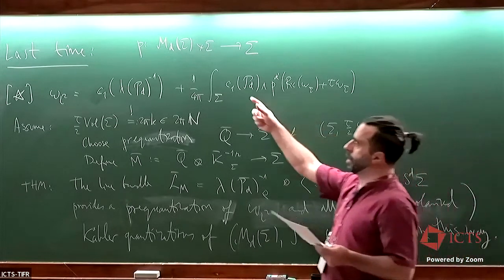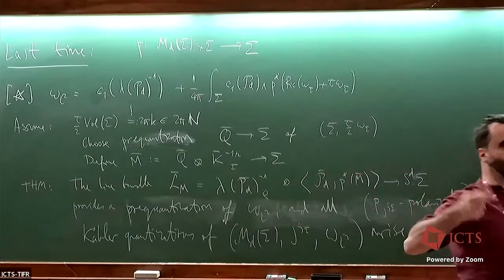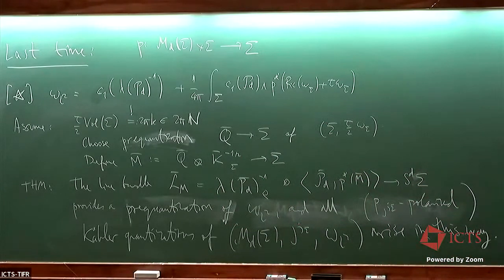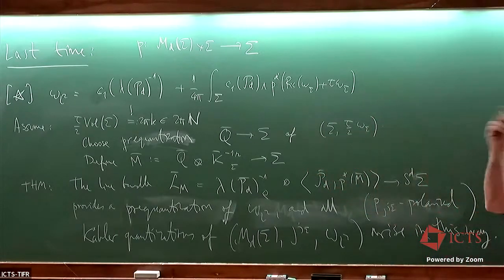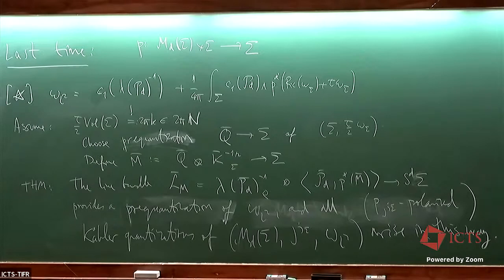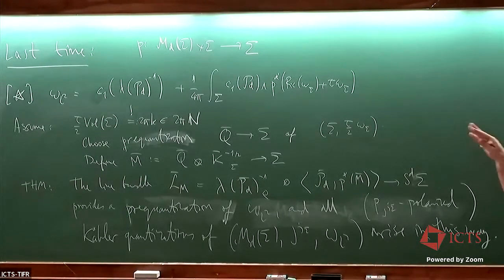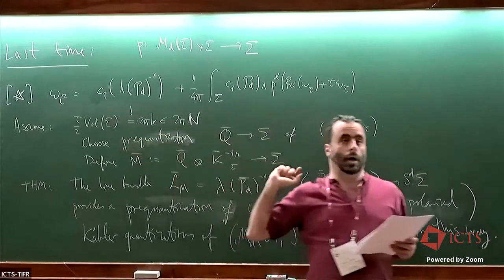I should emphasize that when I write c1, it's the first Chern form — not the cohomology class. The class would be the cohomology class of that, so this may be a bit unusual. It is a form, and this is very important because here we don't want the class. The class is easier to obtain — that was the argument Martin used in the last lecture — but the actual form is much more difficult. This is a formula for omega_L2, not the cohomology class.